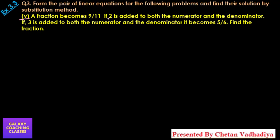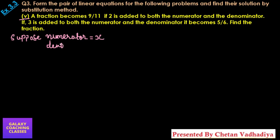So here, they are telling: if we add 2 to both numerator and denominator, we will get 9 by 11; if we add 3 to both numerator and denominator, we will get 5 by 6. Let us suppose the numerator is equal to x and denominator is equal to y. So our fraction will be x by y.